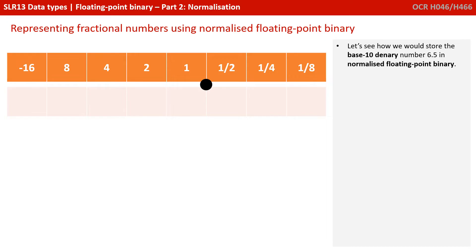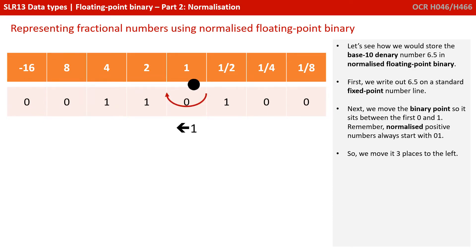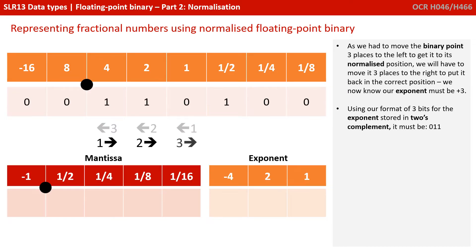Let's see how we could store the denary number 6.5 in normalised floating-point binary. First we write out 6.5 on a standard fixed-point number line — that's a 4 plus a 2 is 6, plus a half is 6.5. Next, we move the binary point so it sits between the first 0 and 1. Remember, normalised positive numbers start 0, 1. So we have moved it three places to the left.